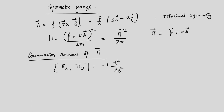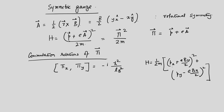In the presence of a magnetic field, πx and πy do not commute. The Hamiltonian is (1/2m)[(Px + eBY/2)² + (Py − eBx/2)²]. The commutation relation [πx, πy] = iℏ²/Lb² where Lb is the magnetic length seen earlier, equal to ℏ/(eB). This gives a new set of canonical operators obeying these commutation relations.